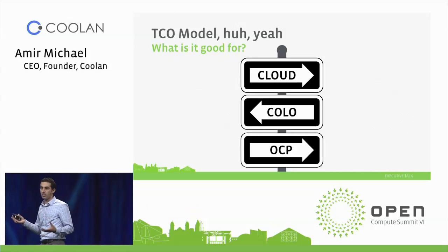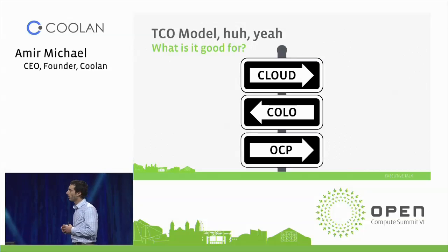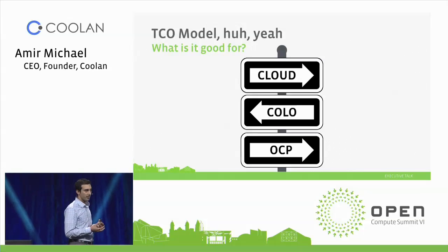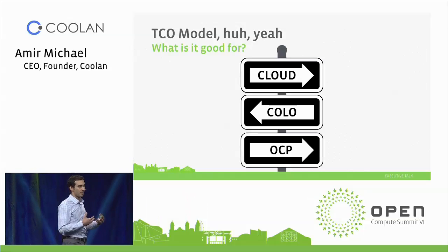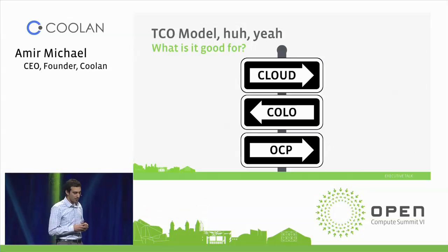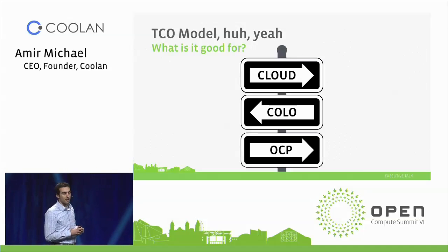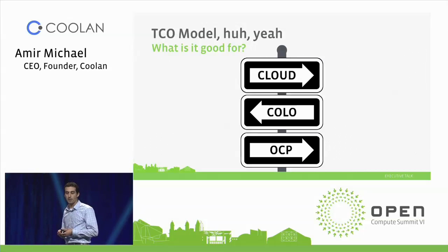So what am I talking about today? I'm talking about a TCO model — a model for understanding how you should deploy your infrastructure. At Kulan, we work with a lot of customers who send us data about their infrastructure; we analyze it and tell them how to better run their systems. Many of them are going through the process of off-boarding, not often talked about in the industry — there's a trend of people moving off of the cloud and trying to understand at what point it makes sense to run their own infrastructure.